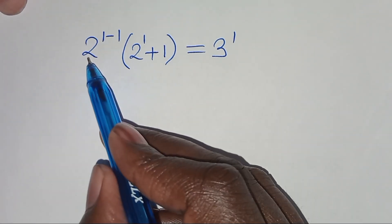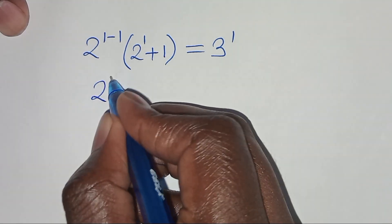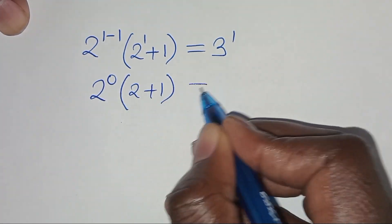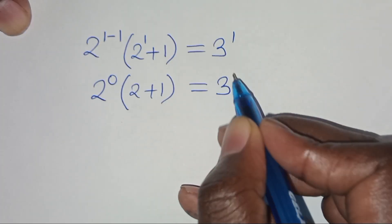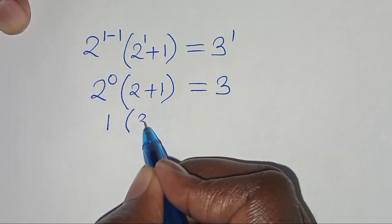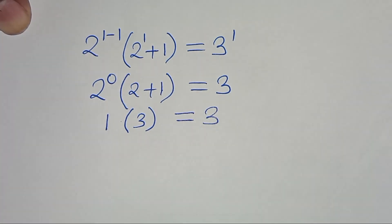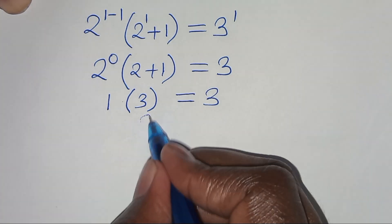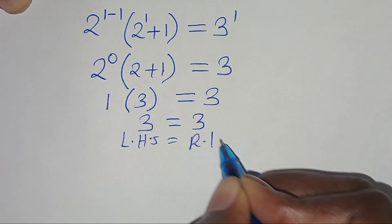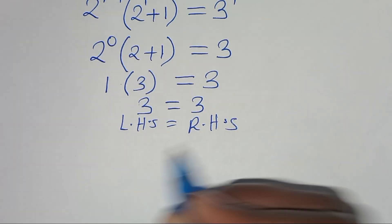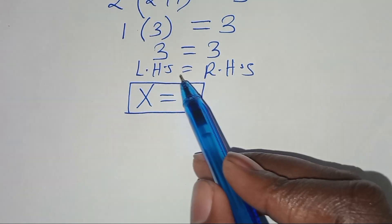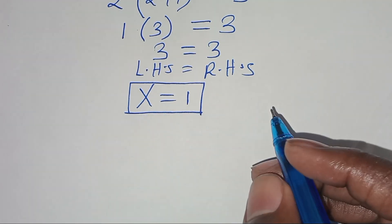This gives 2^0 times (2 plus 1) equals 3. Now 2^0 is 1, so 1 times 3 equals 3, which equals 3^1 equals 3. The left-hand side equals the right-hand side, so x equals 1 is confirmed as a valid solution.